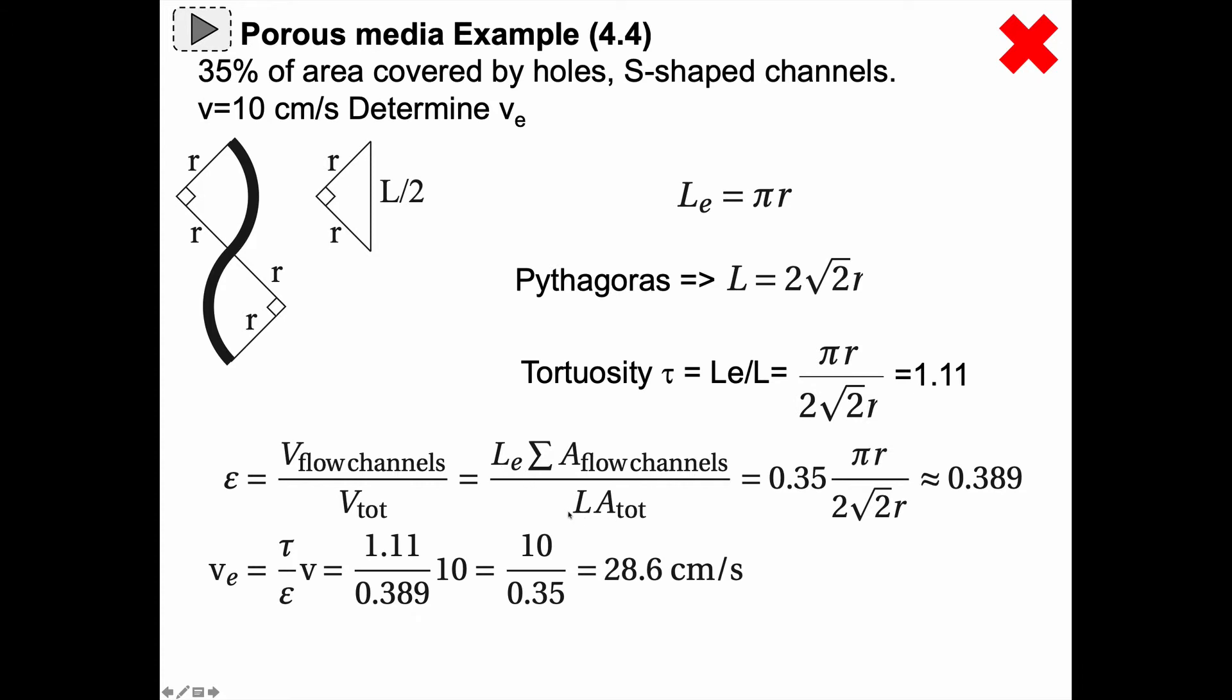Now l e divided by l that is the tortuosity right? Pi r divided by 2 times the square root of 2r and the sum of the area of the flow channels divided by the total area, that's actually 0.35 since 35 percent of the area is covered by holes and we get a porosity of 0.389 or 38.9 percent.